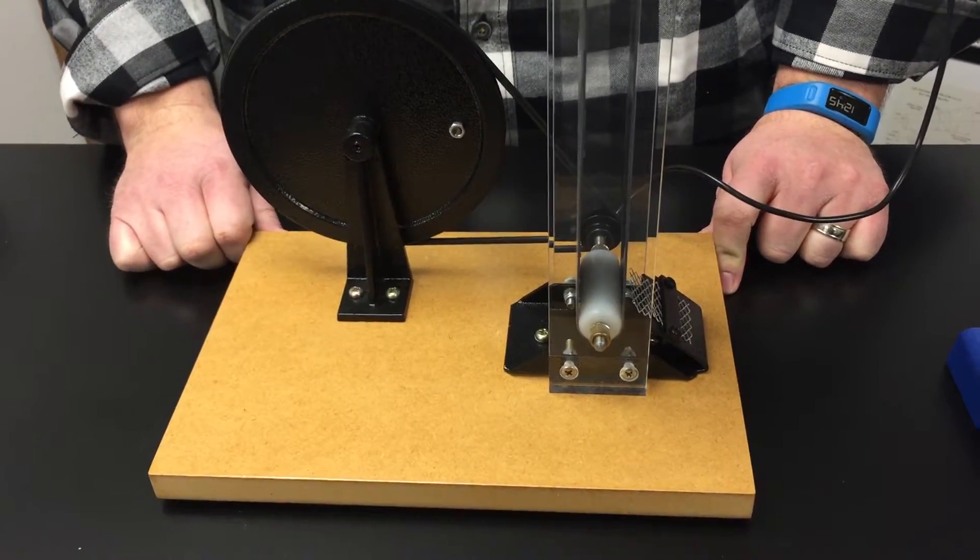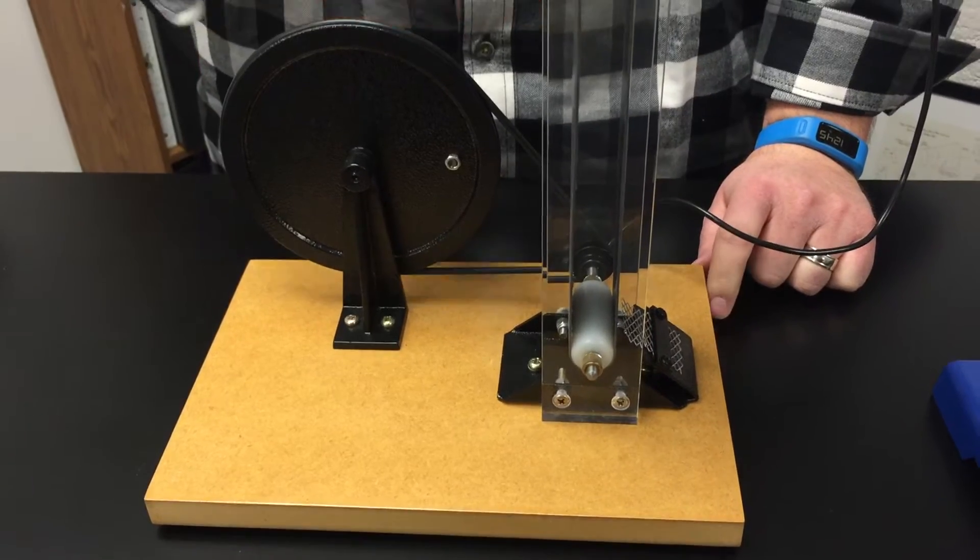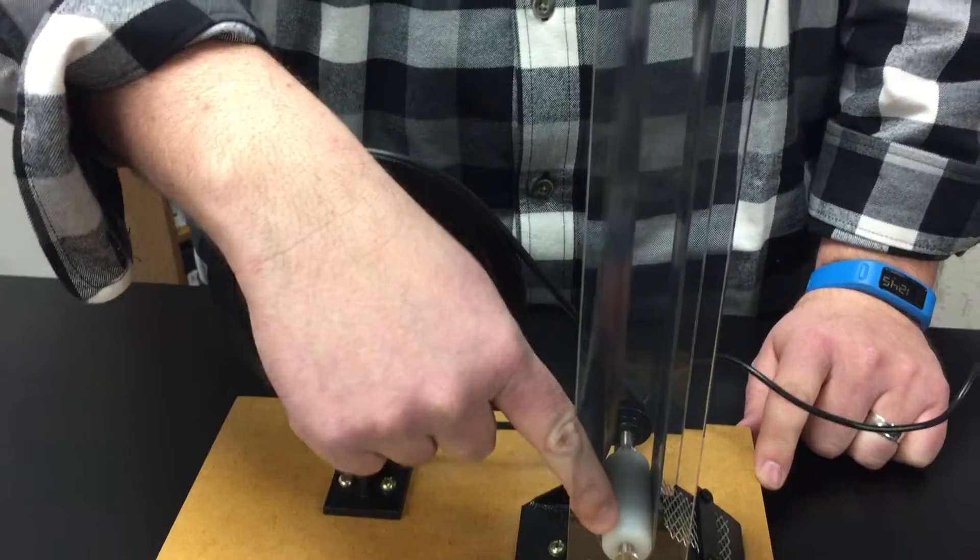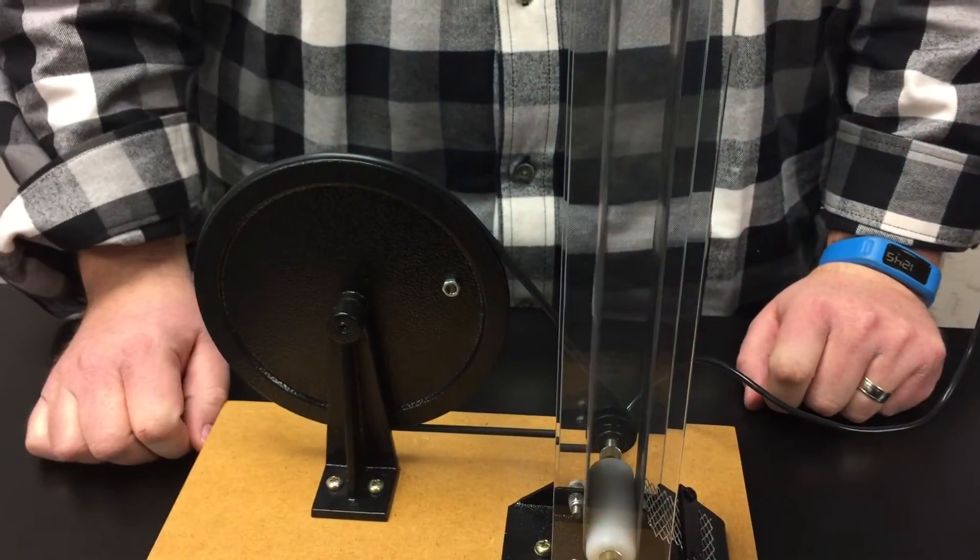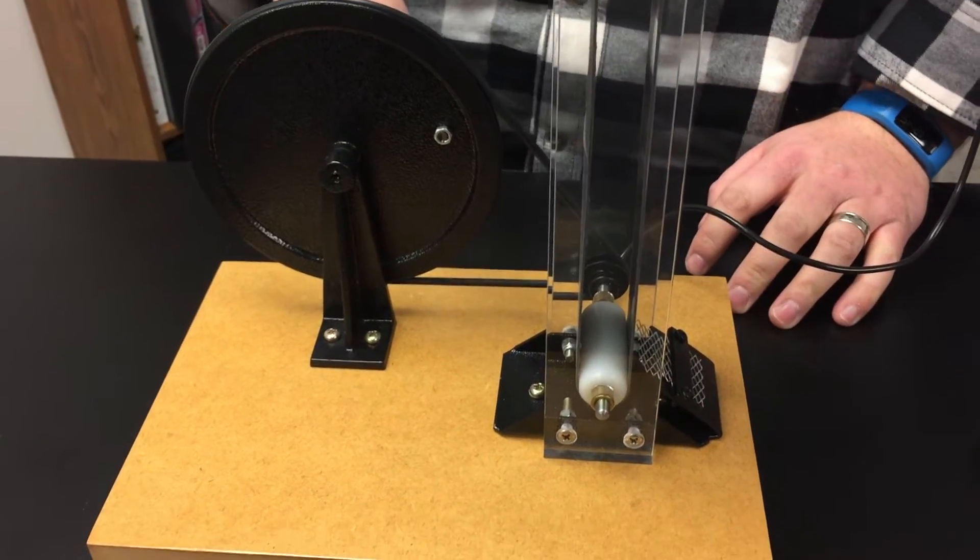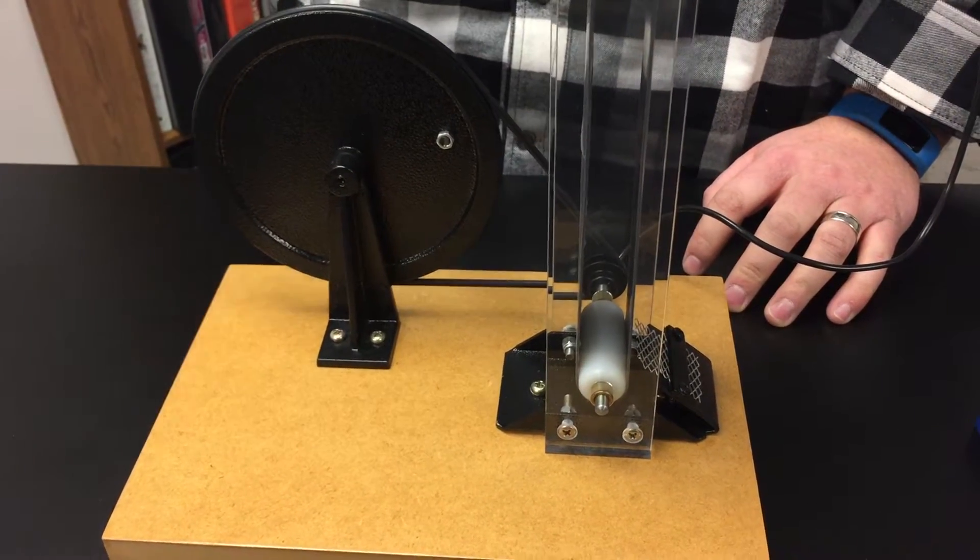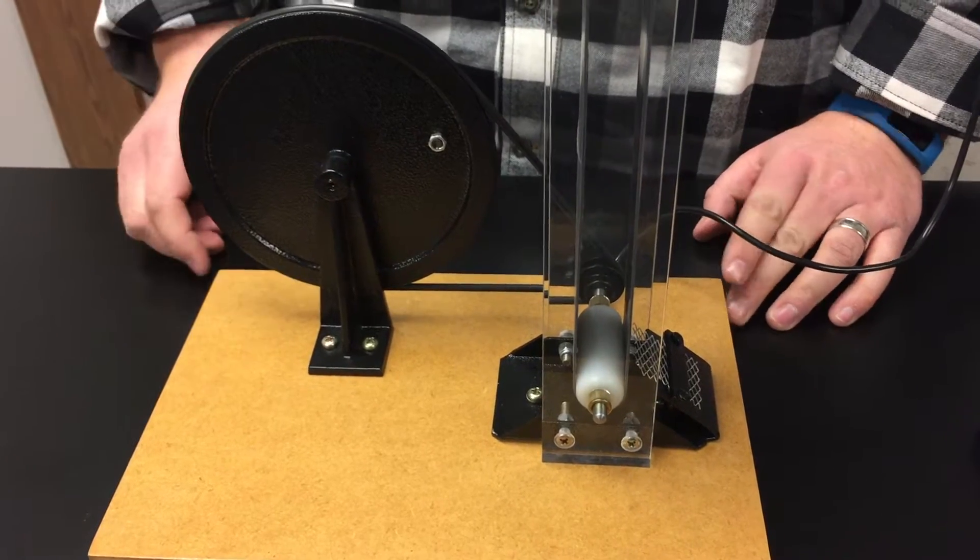One thing you can do if you're having issues getting it to fire is to actually rub wool or silk across the roller. And what that'll do is basically induce a charge on that roller that's opposite from the other roller and kind of jump start the Van de Graaff.